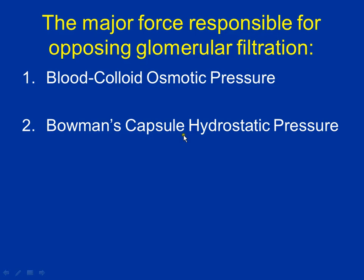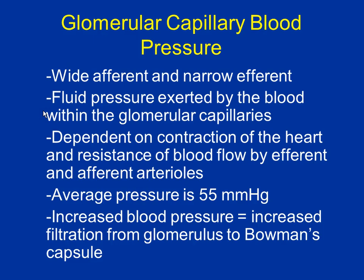The last force is Bowman's capsule hydrostatic pressure. Think of it this way: if Bowman's capsule is a water balloon and the glomerulus is the faucet, as you fill the balloon, there comes a point where the pressure on the walls pushes back equally hard. When Bowman's capsule gets full, it tries pushing water back up and into the blood — that's adding to the blood, so it's a positive value. You put a negative sign in front of the first two forces and a positive sign in front of the last two, then add all four together to find the net filtration force at the glomerulus.